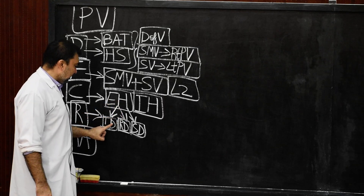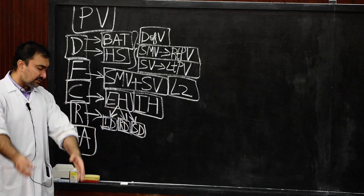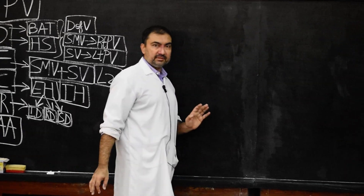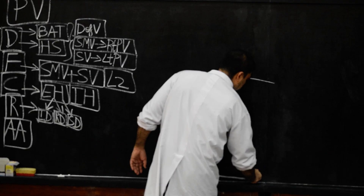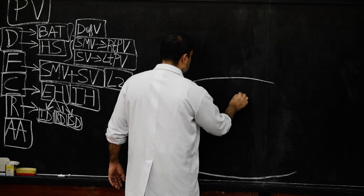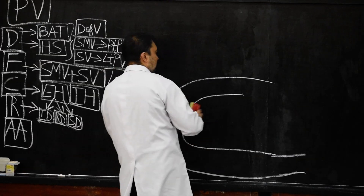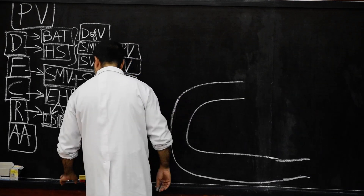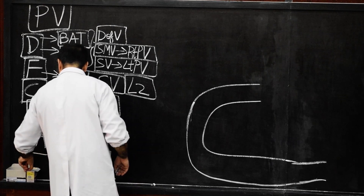I will draw a line diagram. This is the duodenum — first part, second part, third part. Here I will draw the pancreas in violet color, showing the uncinate process, head, neck, body, and tail of the pancreas.